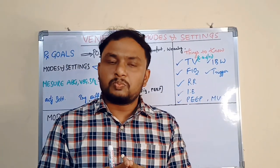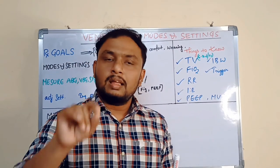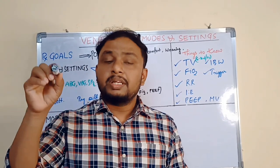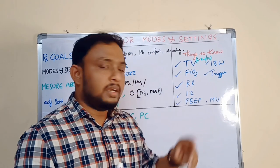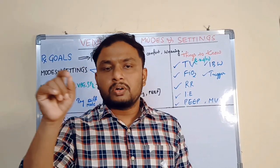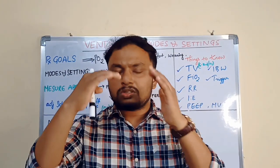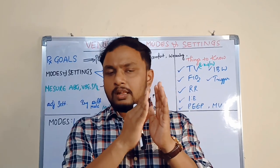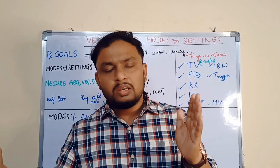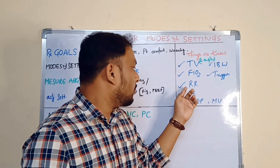FiO2 is fractional inspired oxygen. FiO2 is also set based on the PaO2/FiO2 ratio — the P/F ratio. Based on the P/F ratio you will calculate and set FiO2. How? PaO2 divided by FiO2. Usually you will start from 100. FiO2 you need to maintain at 100% initially. Based on the ABG values and SpO2 values, slowly you will decrease the FiO2.